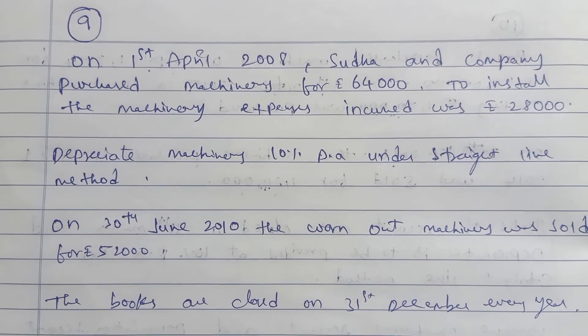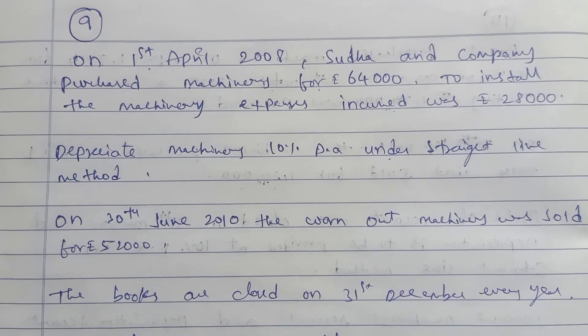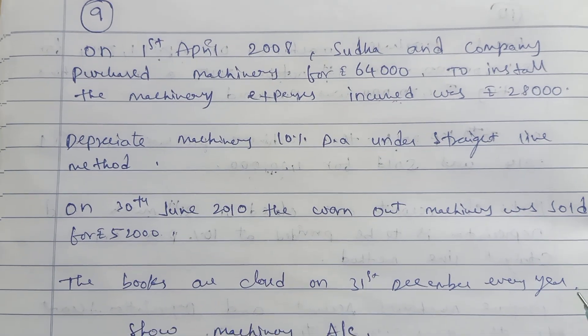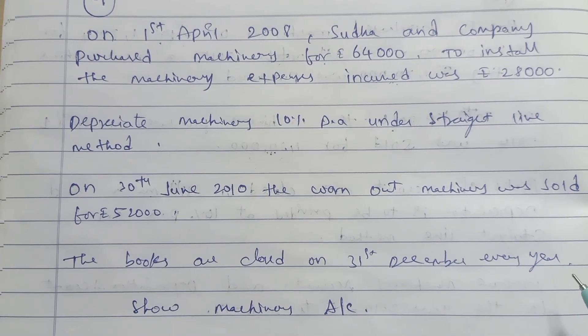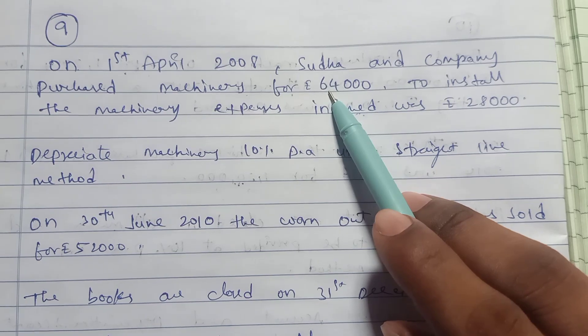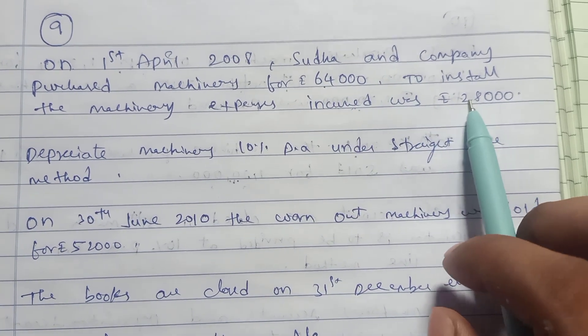On 30th June 2010, the worn-out machinery was sold for $52,000. The books are closed on 31st December every year. First, machinery cost is $64,000, plus the installation charges of $28,000. So first thing is the machinery account.